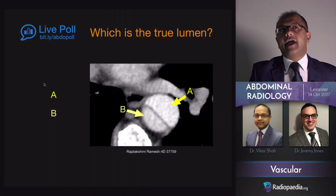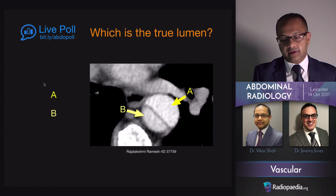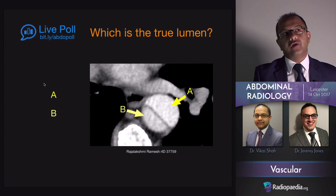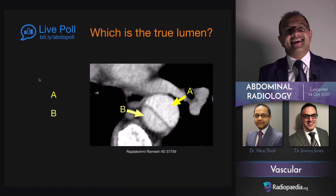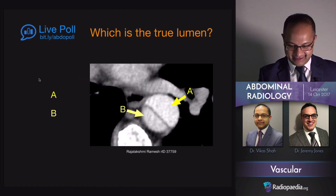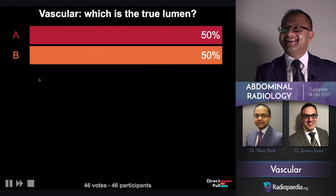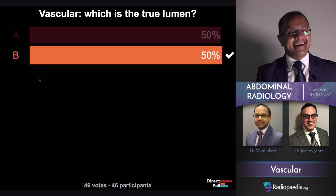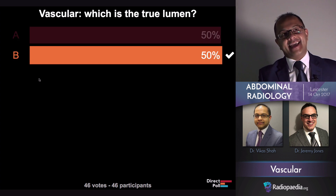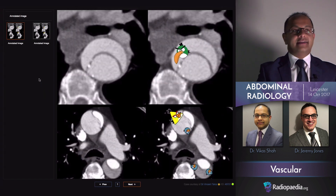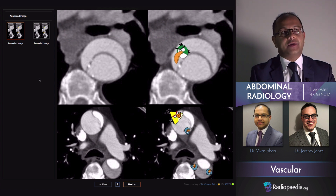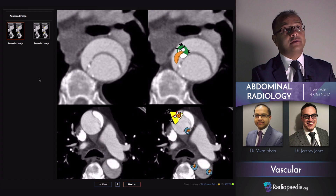It's important to try and identify which is the true and which is the false lumen. On this image, which one do you think is the true lumen of the aorta — is it A or B? It looks pretty even. In fact, B is the true lumen. There's something called the beak sign that can help you — the beak sign is a sign of the false lumen.